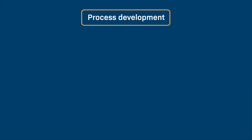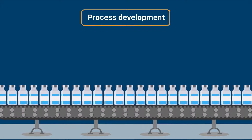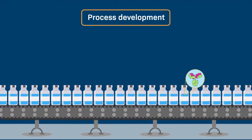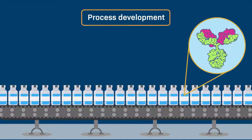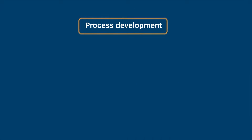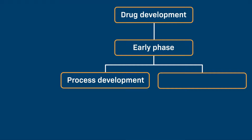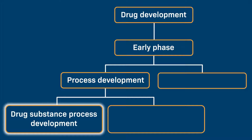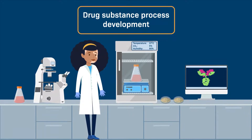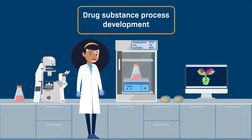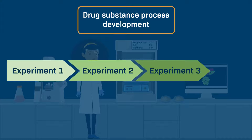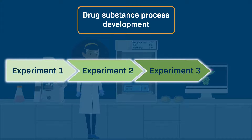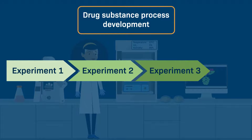As its name implies, this pathway involves the development of a process for making the drug candidate on a large scale. Process development can be further divided into two broad categories. The first category is called drug substance process development, which is extensive and typically involves performing a number of experiments to establish the process for making a drug substance on a large scale.